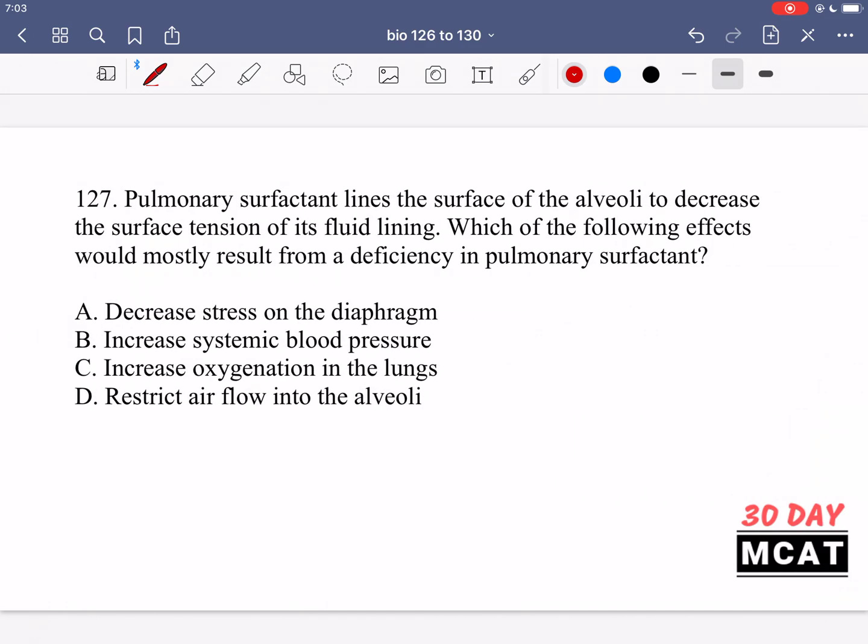In question 127 it says pulmonary surfactant lines the surface of the alveoli to decrease the surface tension of its fluid lining. Which of the following effects would most likely result from a deficiency in pulmonary surfactant? So this surfactant helps the alveoli decrease their surface tension. What would happen if we had a deficiency in it? We know the function of it, what happens if we don't have this thing?